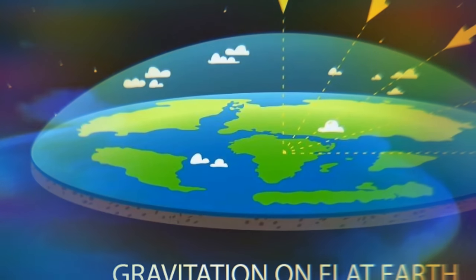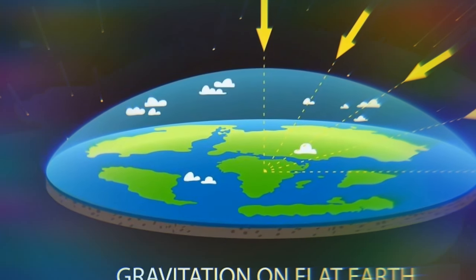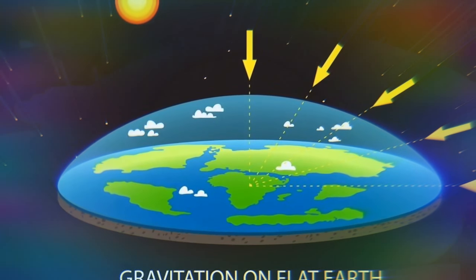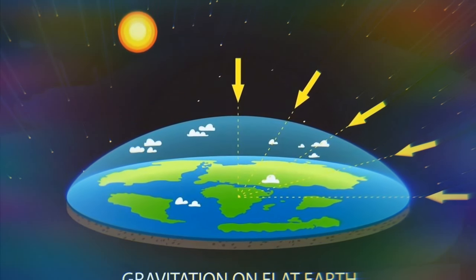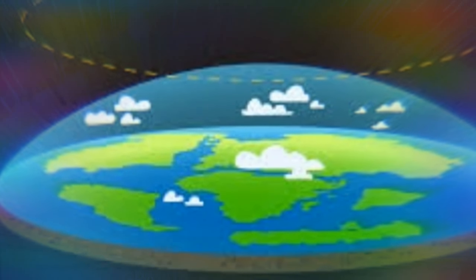As you got increasingly far from the center, gravity would tug more and more horizontally. This would have some strange impacts, like sucking all the water toward the center of the world and making trees and plants grow diagonally since they develop in the opposite direction of gravity's pull.